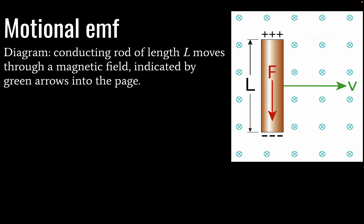First we've got Motional EMF and what we have here is a conducting rod of length L moving through a magnetic field as indicated by these green arrows into the page. The velocity of our wire is given by this green arrow here moving to the right and that will be the velocity of our electrons initially.